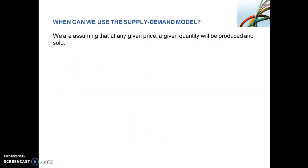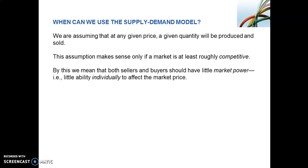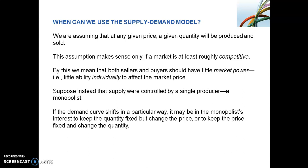When can we use our supply and demand model? We have basically been assuming that for a given price, there is a given quantity that will be produced and sold. But this only applies if the market is roughly competitive. Not all markets are perfectly competitive. We have monopolies, for instance. This assumption is only going to hold if the buyers and sellers have very little market power so that individually they cannot affect the market price. Where you have monopolies or a single producer, they have the ability to decide on either keeping the quantity fixed and changing the price, or keeping the price fixed and changing the quantity. We will return to this in Chapter 10 of your Pindyck and Rubinfeld textbook.